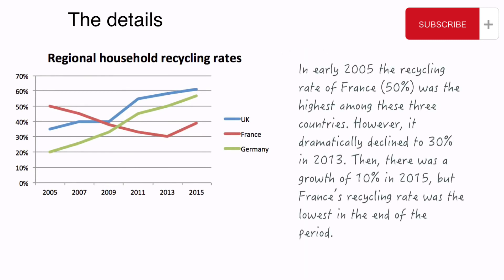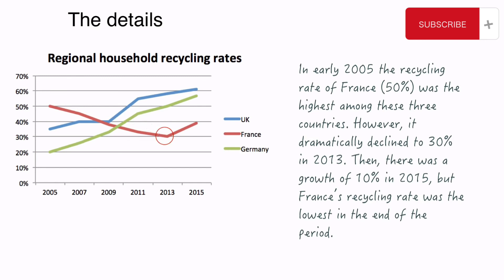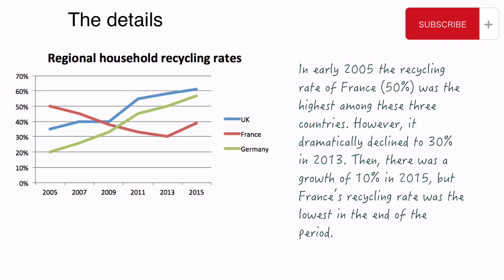Here's my second paragraph with the details. I describe France's rate at the beginning of the period, at the end and at some important points: 'In early 2005, the recycling rate of France, 50%, was the highest among the three countries. However, it dramatically declined to 30% in 2013. Then there was a growth of 10% in 2015, but France's recycling rate was the lowest at the end of the period.' I used superlatives and the adjective 'dramatically' to highlight the big change. I always support my details with data — for example, 'a growth of 10%.' You should support your writing with enough data too. If you say there was a change, don't forget to write the amount of change — write how big it was.